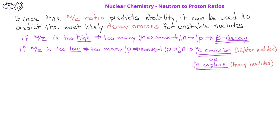However, electron capture is a fairly rare decay mode. If a person has a chart of the island of stability, they could use that to help predict when a particular nuclide will be stable or unstable.